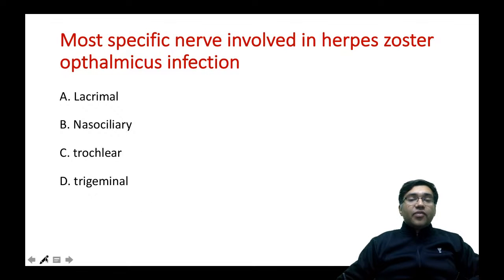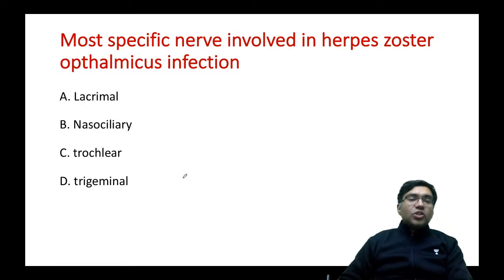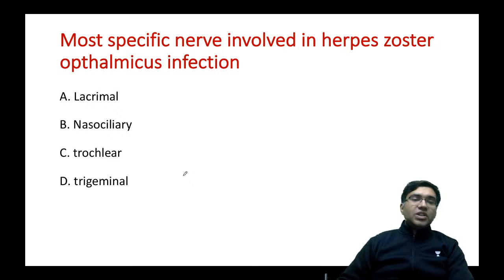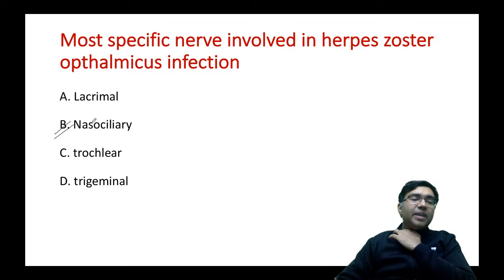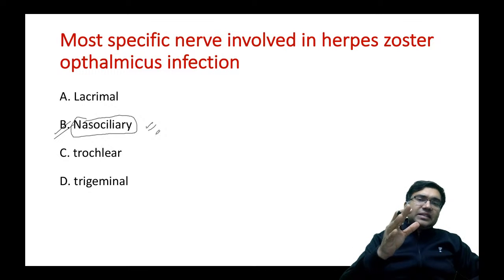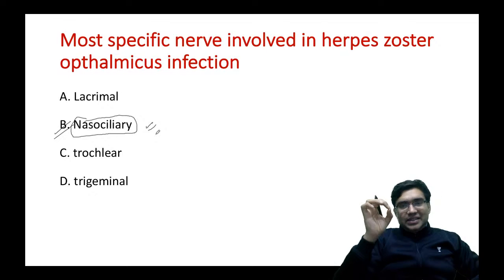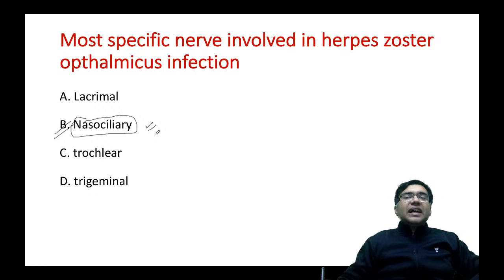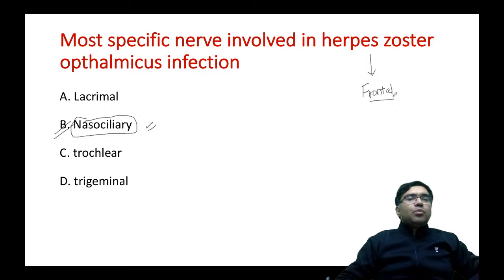Most specific nerve involved in herpes zoster ophthalmicus infection: options are lacrimal nerve, nasociliary nerve, trochlear nerve, or trigeminal nerve. The answer is nasociliary nerve — it is a branch of the fifth nerve, but if given as an option you would mark nasociliary nerve. Note: if they ask the most common nerve involved, the answer is frontal nerve; if they ask the most specific nerve, it is nasociliary nerve.